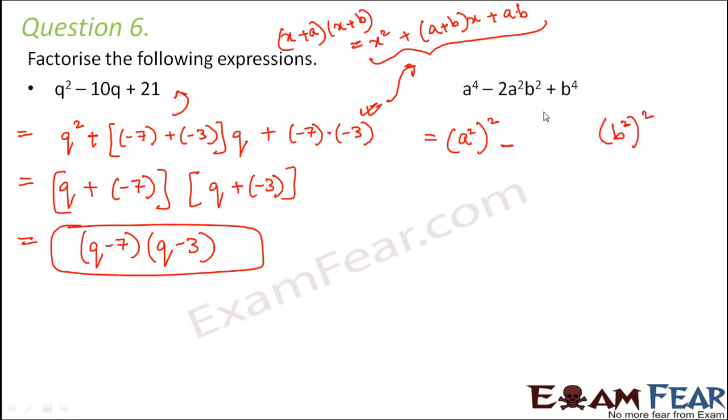Now, if you look at the middle term, this can be written as 2 into a into b. So here a square behaves like a and b square behaves like b. So that is a square minus 2ab plus b square. So this is a minus b whole square. So that is a square minus b square whole square.